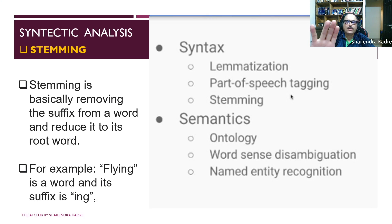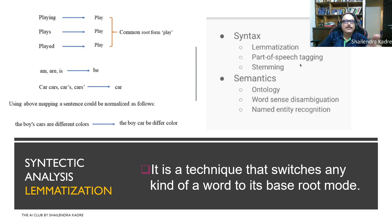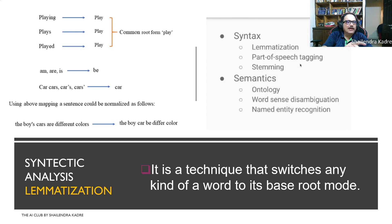For stemming — for example, 'flying' is a word and its suffix is 'ing'. In stemming, we just remove the suffix, so the stem of 'flying' is 'fly'. More examples: 'playing' becomes 'play', 'plays' becomes 'play', 'played' becomes 'play'. We remove suffixes like 'ed', 's', and 'ing' to get the base word. For 'car', 'cars', 'car's', 'cars'' — the stem is 'car'.